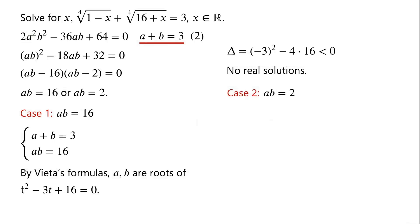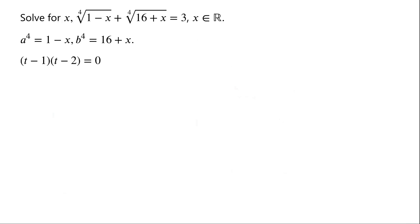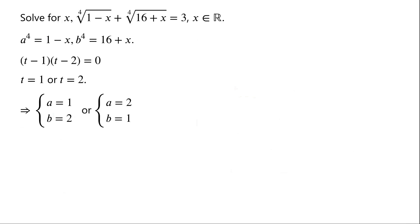Case 2: ab equals 2. Again, we have a system of equations: a plus b equals 3 and ab equals 2. By Vieta's formulas, a and b are roots of t² minus 3t plus 2 equals 0. The left side can be factorized as (t minus 1)(t minus 2) equals 0. So either t equals 1 or t equals 2. That is, a equals 1 and b equals 2, or a equals 2 and b equals 1.